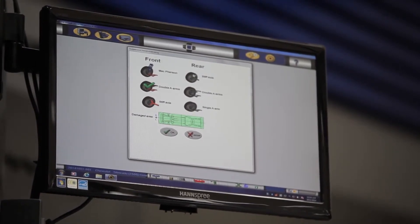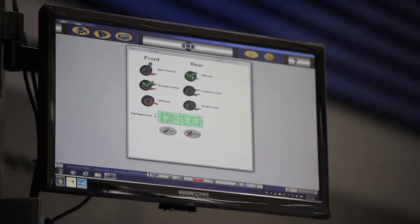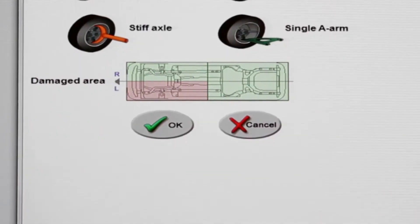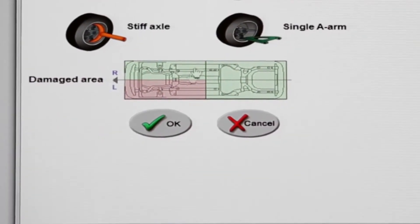The next step is to select the area of damage on the vehicle. To do this, click the green box. The box changes to red. Now select OK.